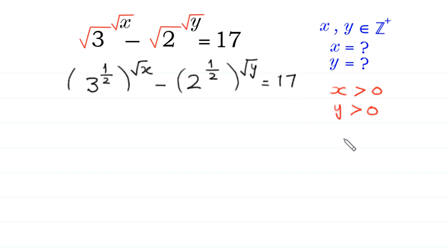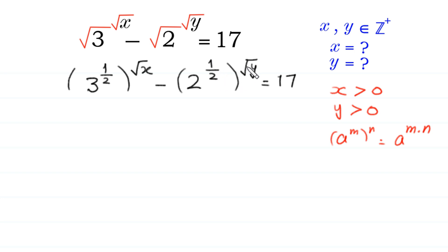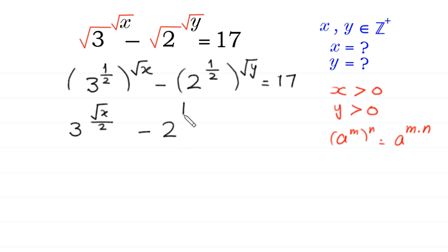Now according to the property of exponents, a to the power m whole to the power n is equal to a to the power m times n. This power 1 over 2 will be multiplied by this power square root of x, giving 3 to the power square root of x over 2, minus 2 to the power square root of y over 2, is equal to 17.